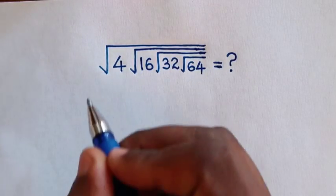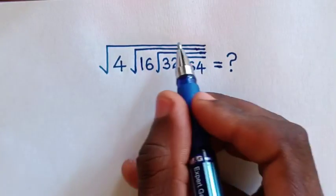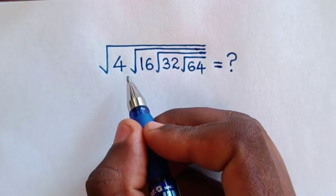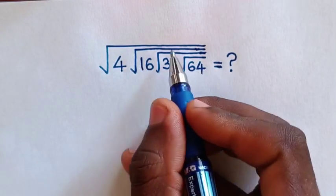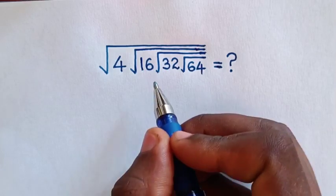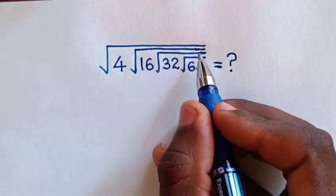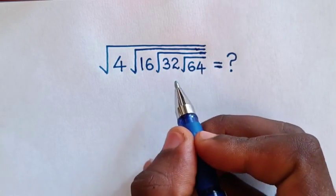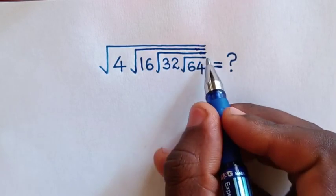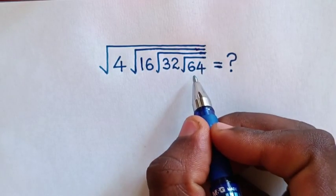Hello! How to solve square root of 4 under square root of 16 under square root of 32 under square root of 64?